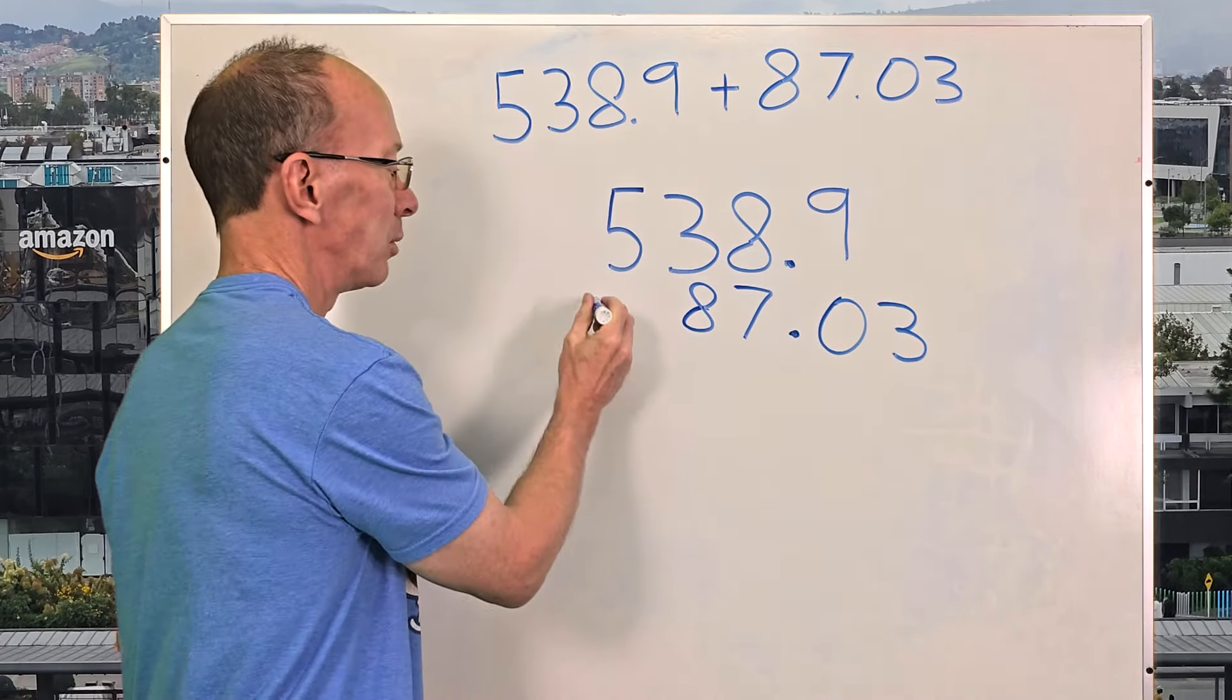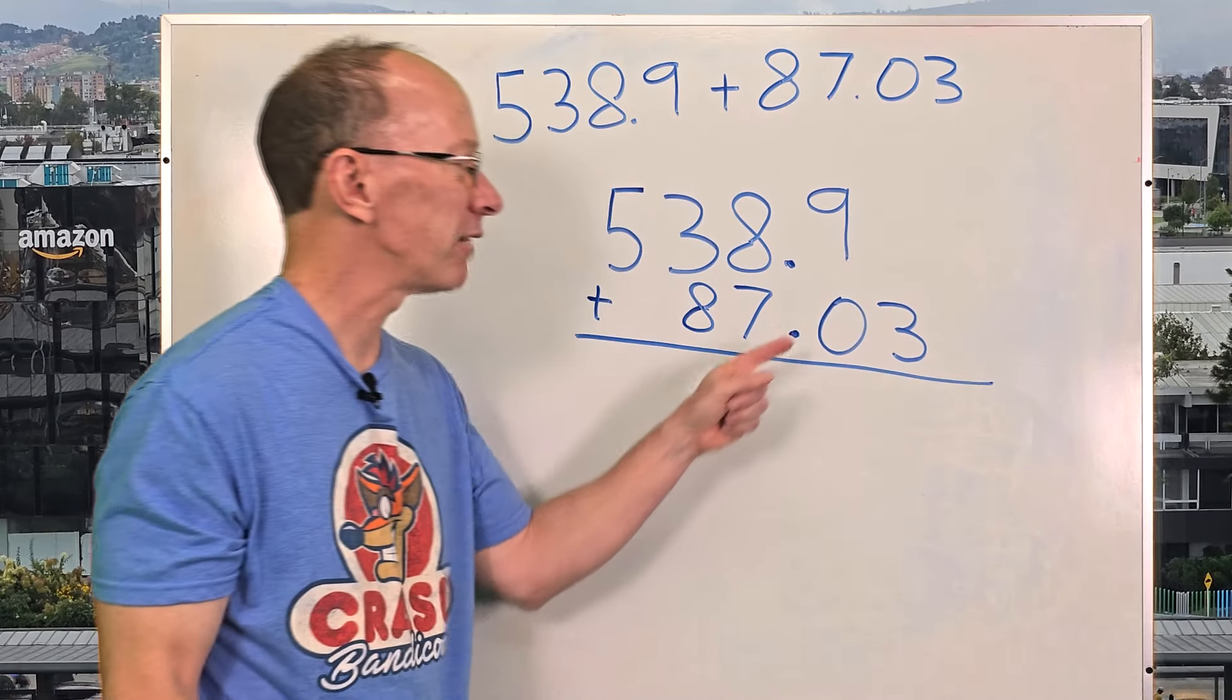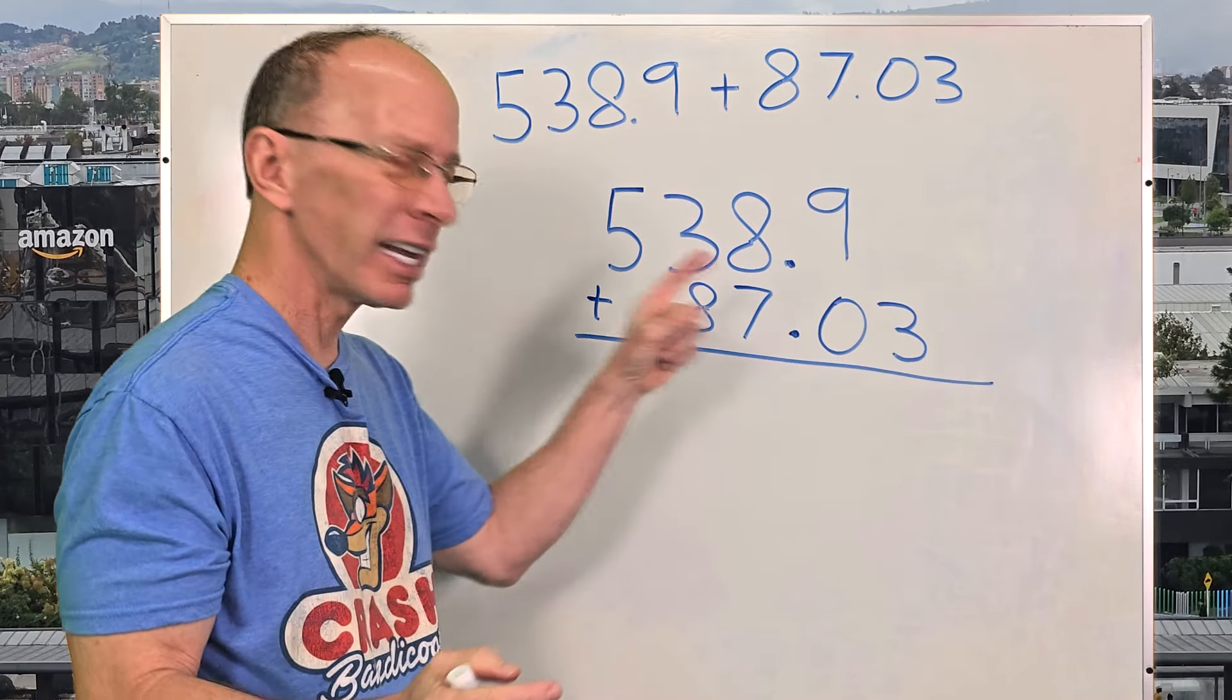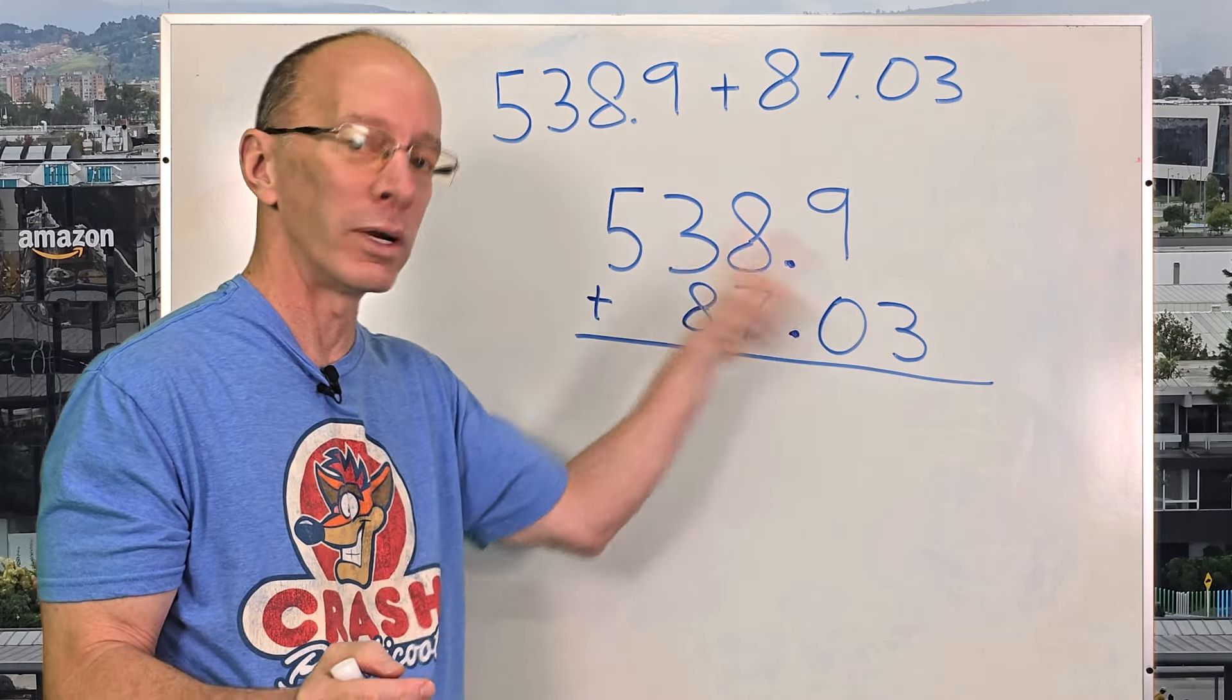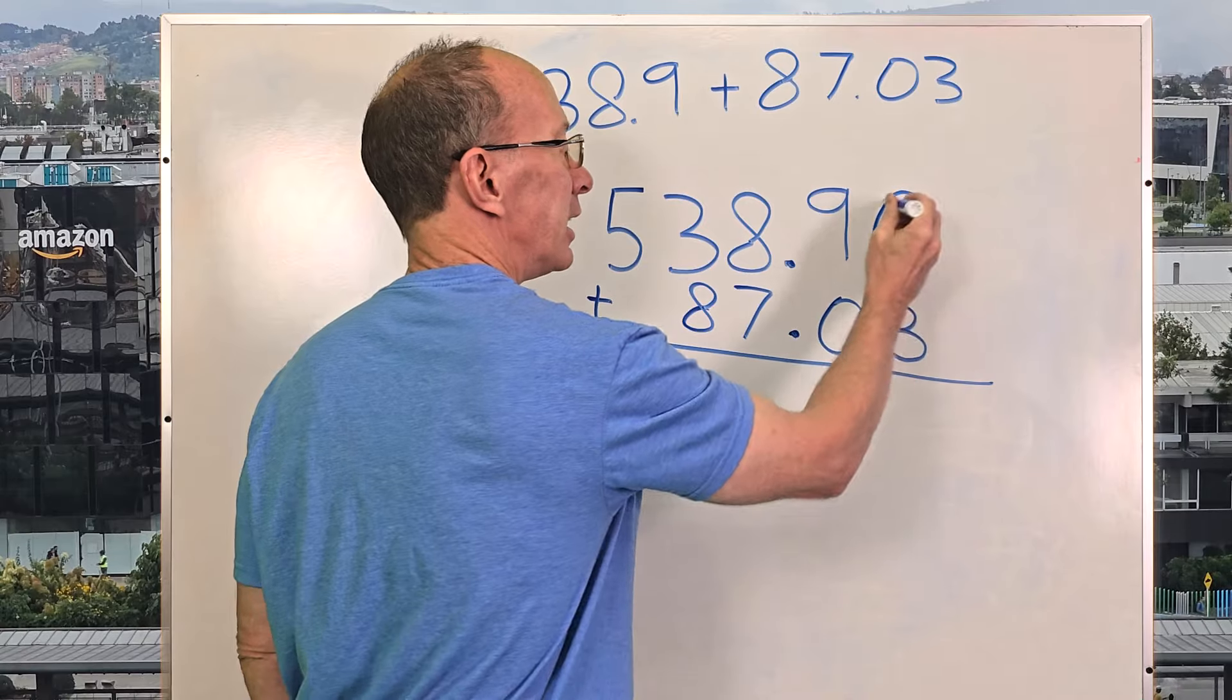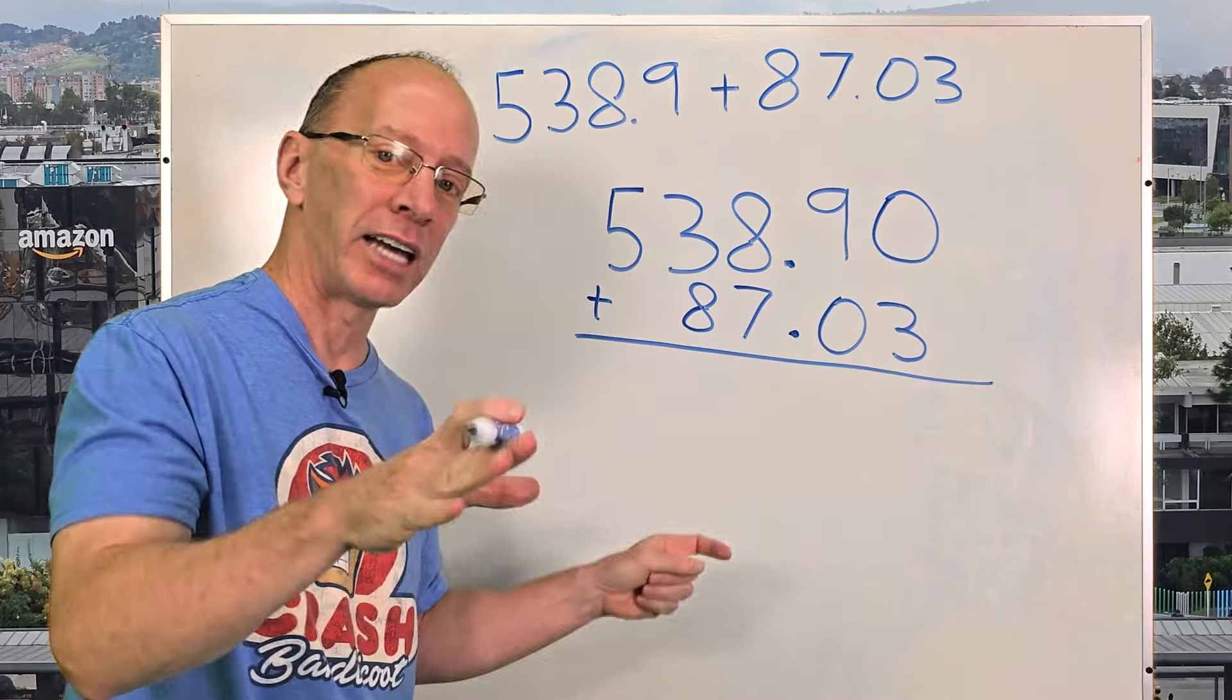And then I'm going to put my addition symbol here. And then you'll notice that I have a blank right there. It's okay if you want to add it just like that, but I like to put a zero. It's not going to change the value of this problem whatsoever. So I'm going to just put a zero right here. And it just makes it a lot easier when you start to add up numbers.